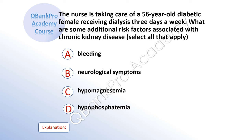The nurse is taking care of a 56-year-old diabetic female receiving dialysis three days a week. What are some risk factors associated with chronic kidney disease? Select all that apply. A: bleeding. B: neurological symptoms. C: hypomagnesemia. D: hypophosphatemia.